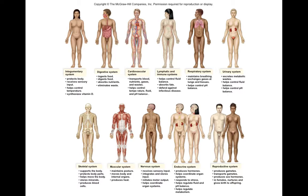Urinary system: urologist. Skeletal system: orthopedics. Muscular system: kinesiology, which deals with muscle movement or pain. Nervous system: neurologist. Endocrine system: endocrinologist. Also noteworthy is nephrology, involving the kidneys and adrenal glands — a nephrologist may also be considered a specialist for the urinary system in part, since the urinary system involves the kidneys.